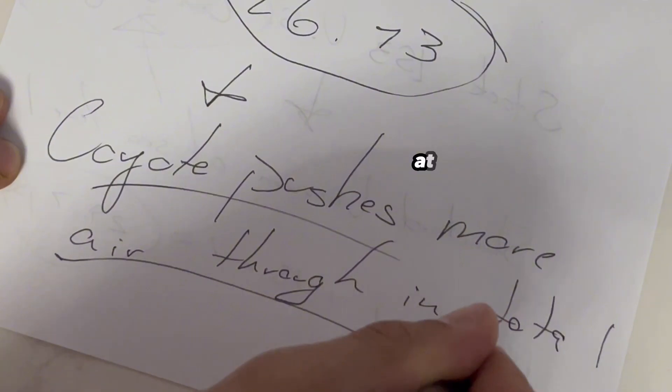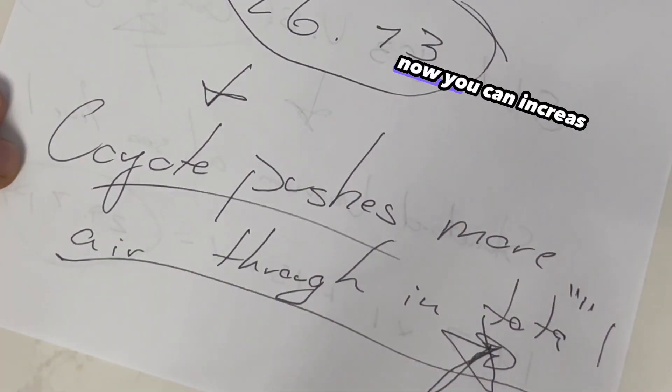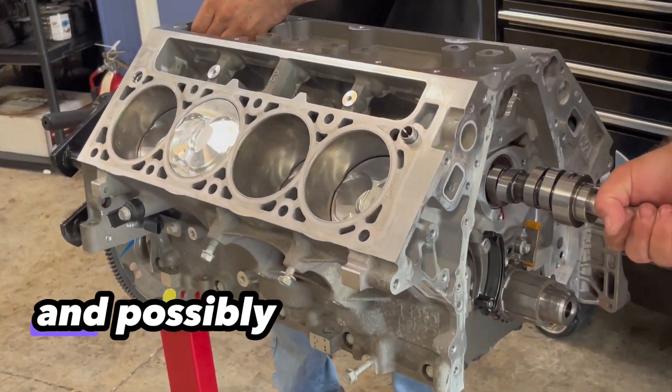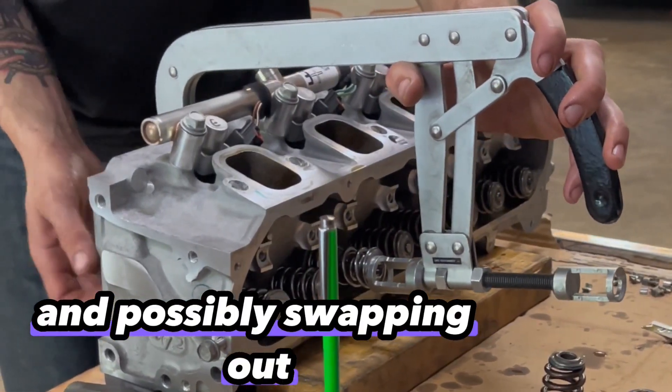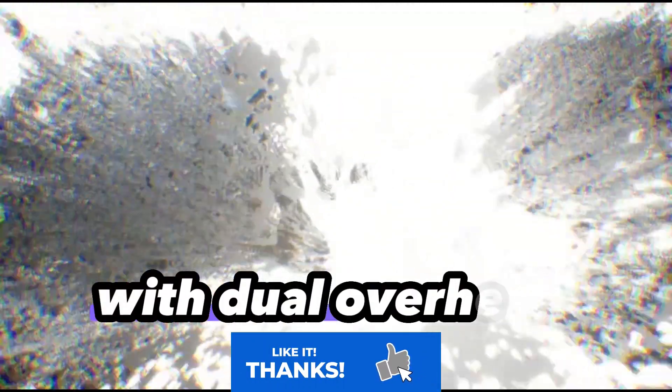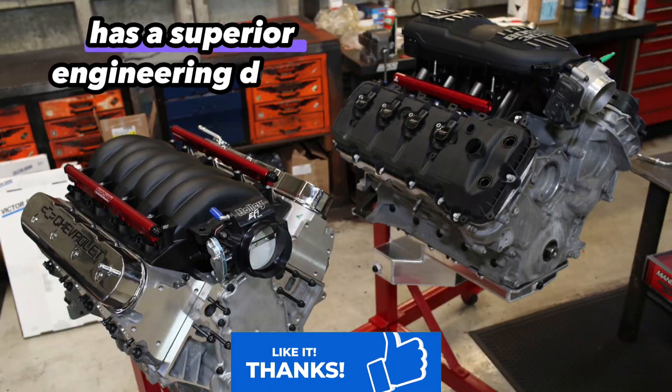More air equals more power at the same boost level. Now you can increase the intake CFM of any LS motor by basically upgrading the valve train and possibly swapping out heads for more flow. But it is an undeniable fact that a stock Gen 3 Coyote with dual overhead cams has a superior engineering design.